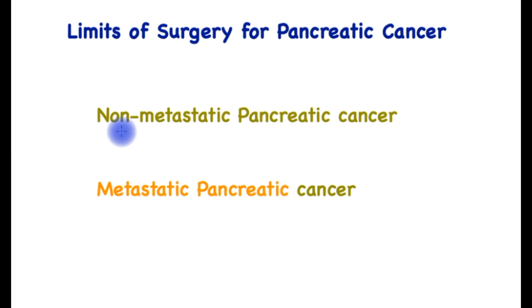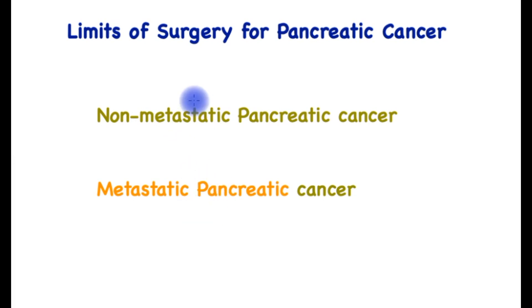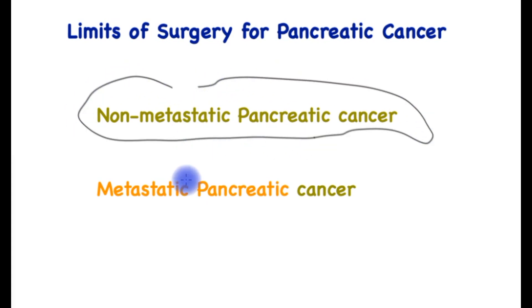At diagnosis, pancreatic cancer is either not metastatic — that is, it has not spread beyond the confines of the pancreas and is localized — or it has spread to other parts of the body. Our discussion is around the former. In the great majority of patients with metastatic pancreatic cancer, surgery is not an option, but there are some small caveats to discuss.